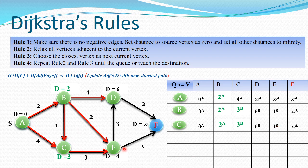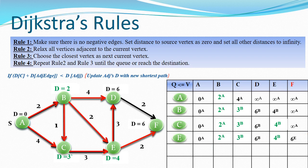Our next current vertex is E with distance 4. From E we relax its two adjacent vertices. First: 4 plus 3 is 7, which is not an improvement so we keep the same value. Second: 4 plus 2 is 6, which is less than infinity, so we update F's distance to 6. We copy the rest of the existing values into this new row.